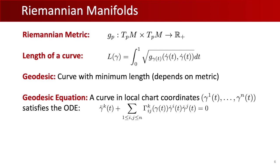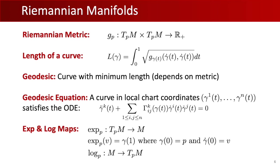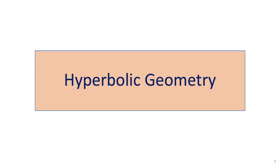We can compute geodesics using the metric tensor. By parameterizing a curve in local chart coordinates, a geodesic must satisfy the geodesic equation, where the gamma_ijk are Christoffel symbols computed from the Riemannian metric tensor. Two important maps on Riemannian manifolds are the exponential and logarithmic maps. The exponential map maps a tangent vector to the manifold as the value of the geodesic starting at point p with initial velocity v at time t equals 1. Its inverse, the logarithmic map, maps a point on the manifold back to the tangent space. These tools give rise to distances and maps used to design graph embedding methods.